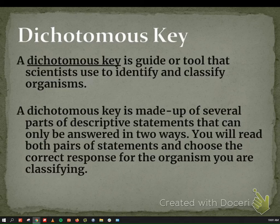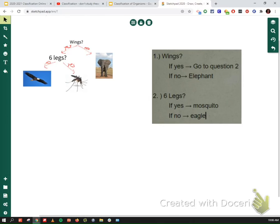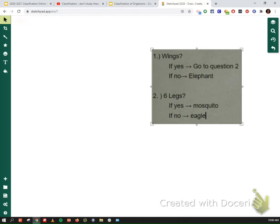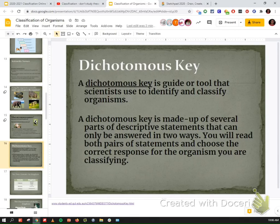Here's the written-out version of the dichotomous key. Question one: does it have wings? If yes, go to question two. If no, it's an elephant. Question two: does it have six legs? If yes, it's a mosquito. If no, it's an eagle. You can do this with 10, 15, 20, or 1,000 different animals or organisms, and it will help you identify them. That's the dichotomous key — and it can look different in different formats.